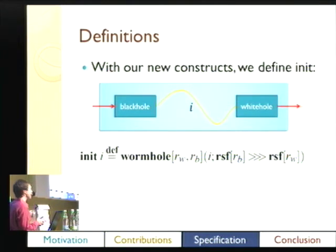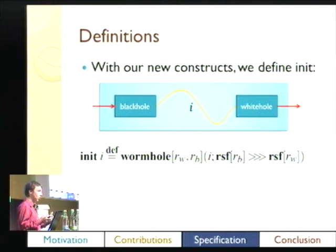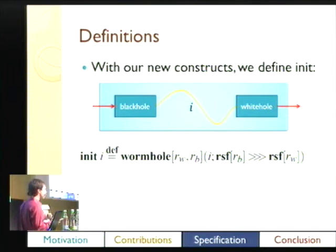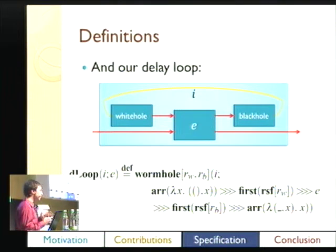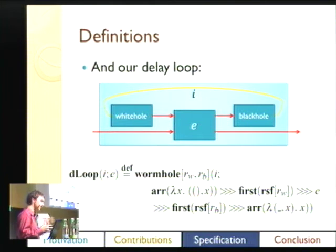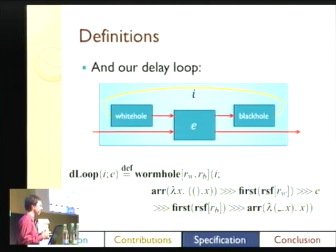We can now go back and define some things we talked about earlier. `Init` is just a wormhole that plugs its black hole right into the white hole — using the arrow combinators. And `loop`, similarly, is a wormhole that plugs its white hole through a signal function and into the black hole, with some extra piping with `arr`.